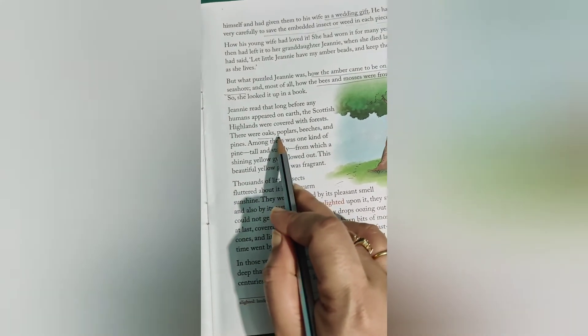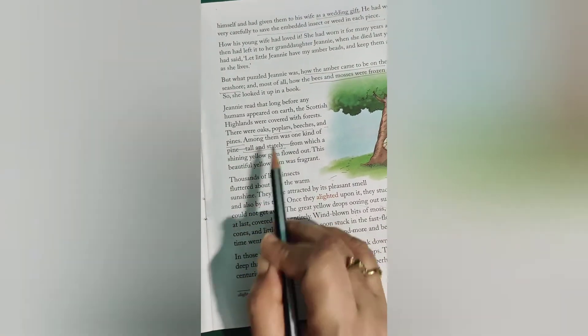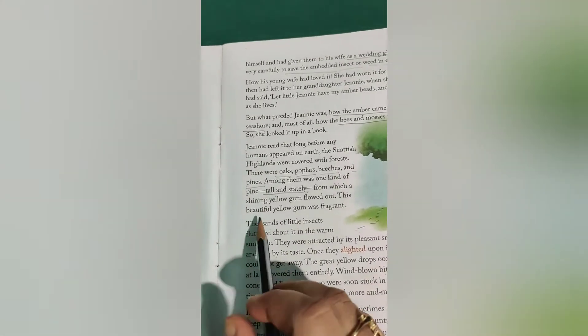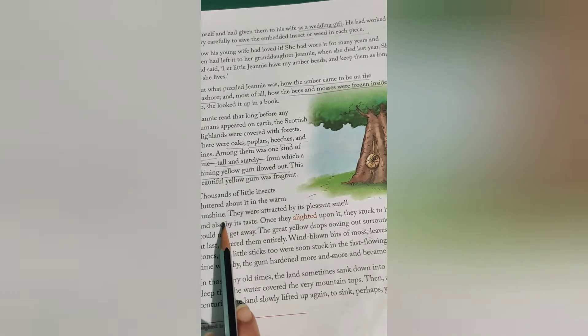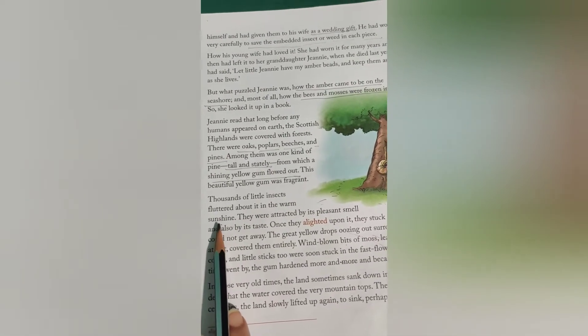The Scottish Highlands, where Jenny was living, were covered with forests — there were oaks, poplars, beeches, and pines. Among them there was a special pine tree that was tall and stately. From that tree a shining yellow gum flowed out, just as a rubber plant gives rubber. This beautiful yellow gum was fragrant, and thousands of little insects fluttered about it in the warm sunshine.